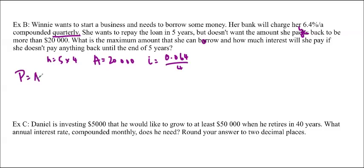So, again, we just write our formula. P equals A times 1 plus I to the negative N. And fill it in, 20,000, 1 plus 0.064 divided by 4. You don't have to find the value if you don't want. Just type into your calculator to the negative 20.